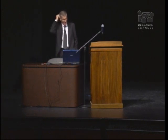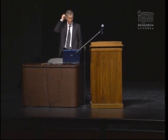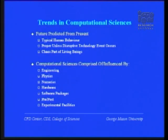Now let's see if we can predict a little bit over the future. A word of caution: predicting the future from the present is typical of human behavior, but it's only proper unless some disruptive technology event occurs — and in this field a lot of those tend to occur. Of course, chaos is part of living beings, and humans can be very disruptive as a technology.